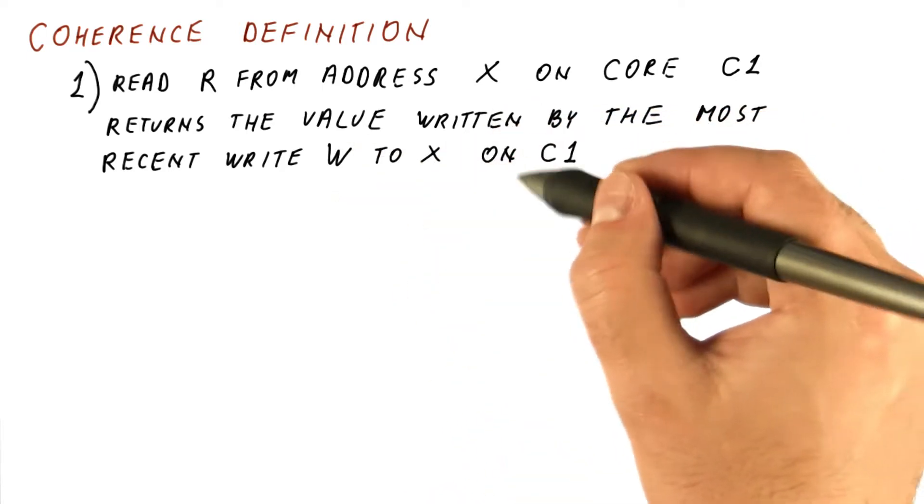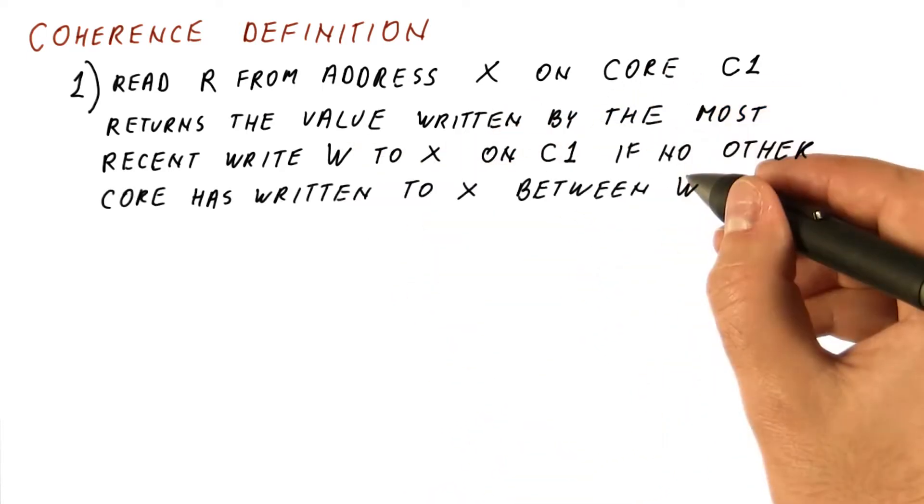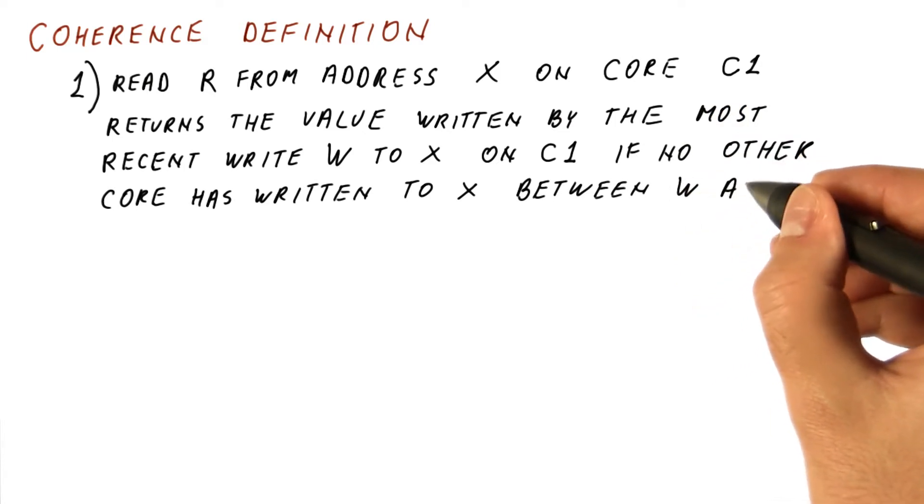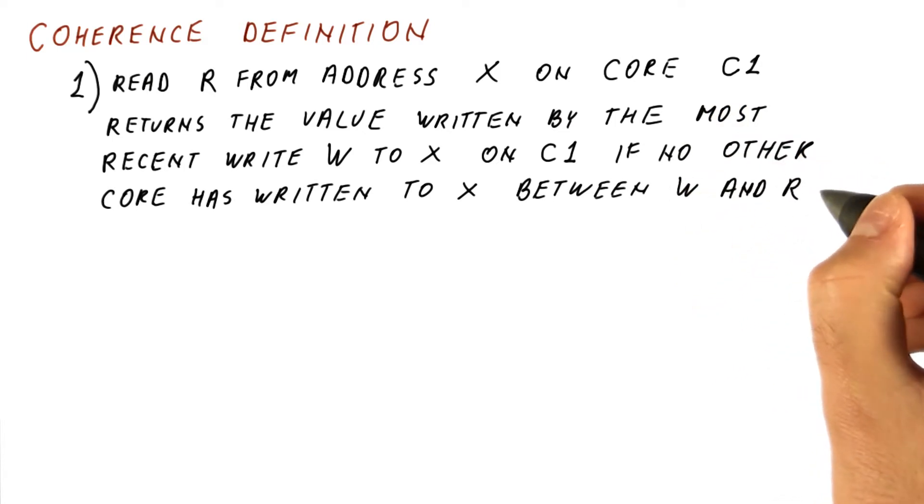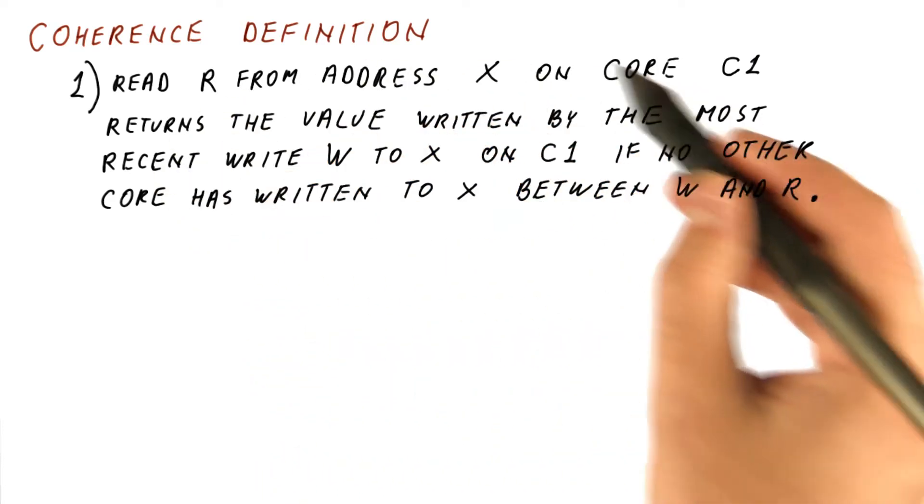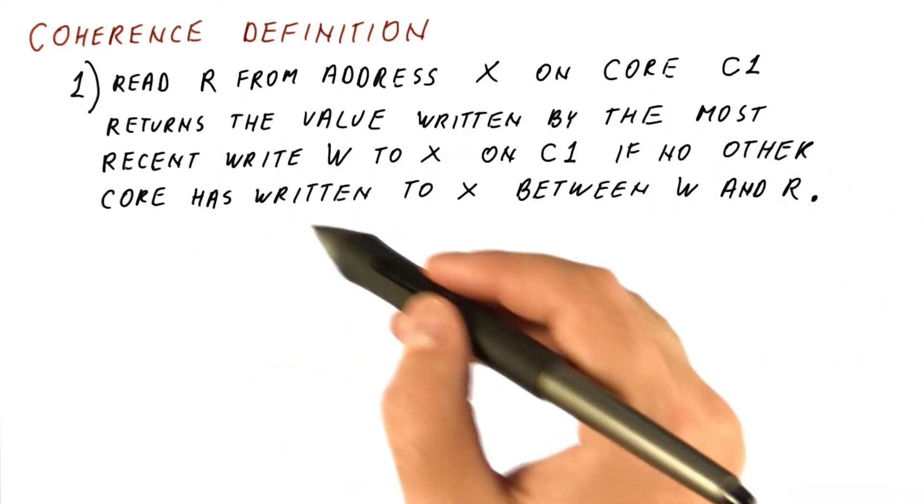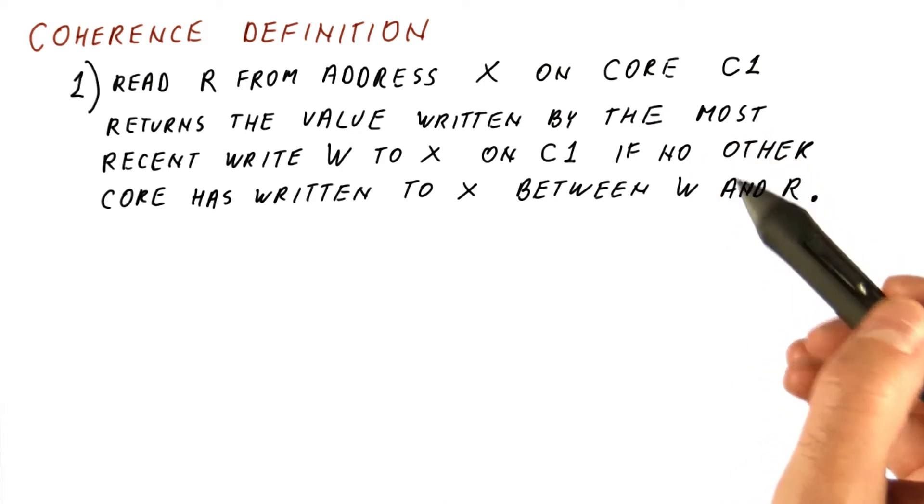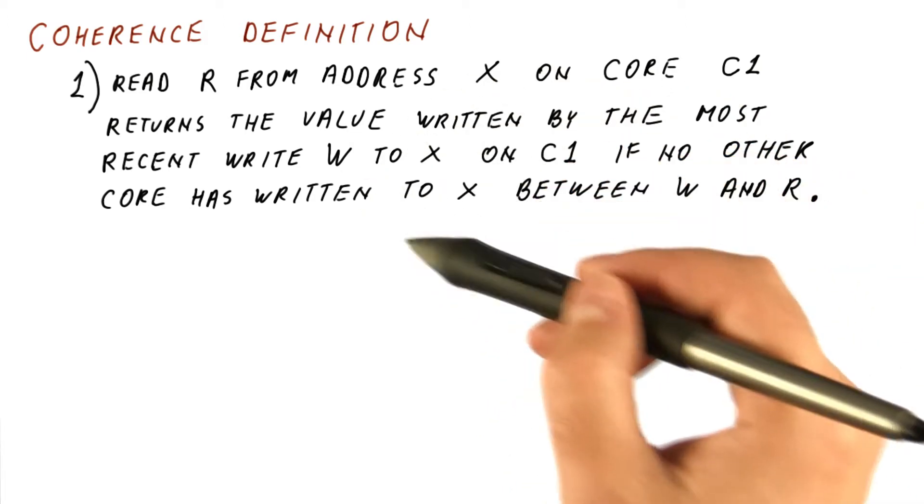And that write was on the same core c1. If no other core has written to that location between the accesses w and r. So this first part of the coherence definition really says that if one core is operating on a location alone,